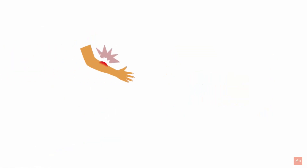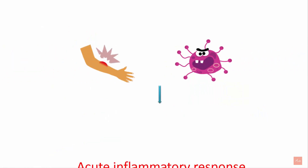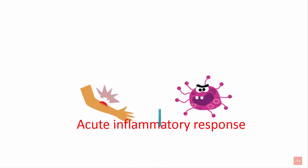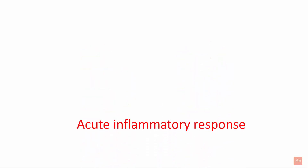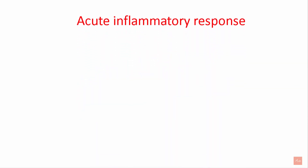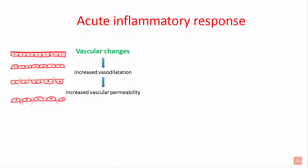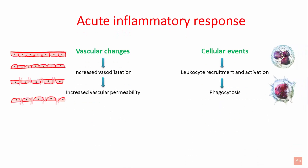Whenever there is injury to any part of the body or entry of a pathogen, the body reacts by a process called acute inflammatory response. The acute inflammatory response is part of the innate immune system, and it consists of vascular changes and cellular changes.